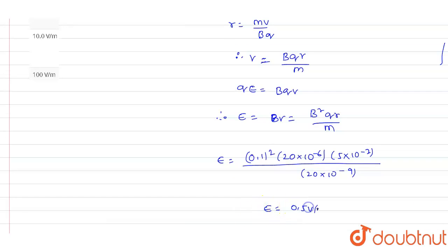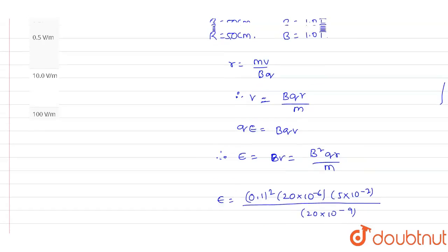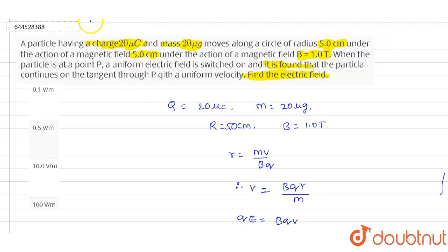This is the value of electric field that we have got. So out of these four options, option B we have 0.5 volt per meter, so option B is the correct answer for this question. Thank you.